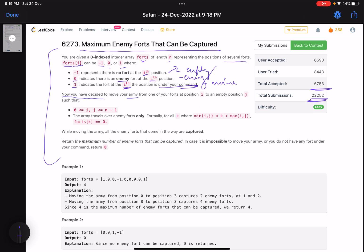You have decided to move your army from one of your forts at position i to an empty position j. What are the conditions? i and j should lie between 0 to n-1, meaning these should be valid indices. Your valid indices are from 0 to n-1.